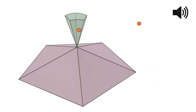We determine whether a point contacts a face by examining whether it is within the block of the face, and we apply a normal contact force to push it out. This ensures contact forces are always orthogonal to the surface.